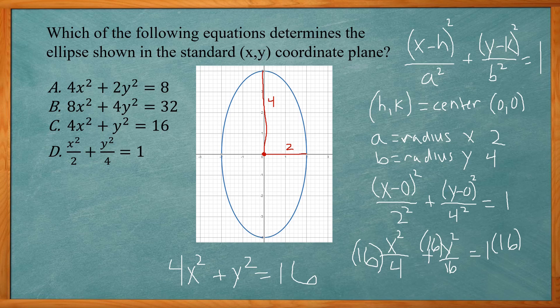Alright, so I have 4x² plus y² equals 16. And that is answer choice C.